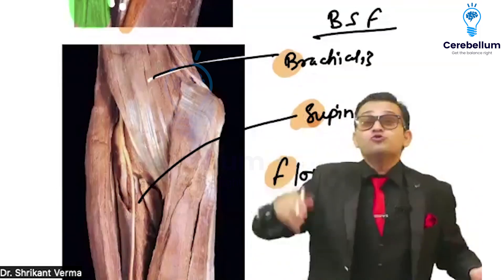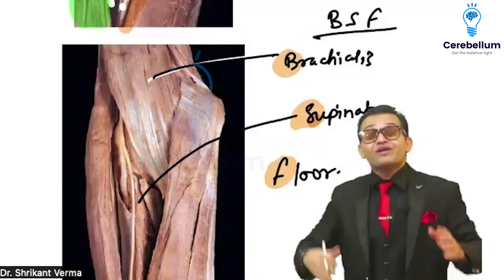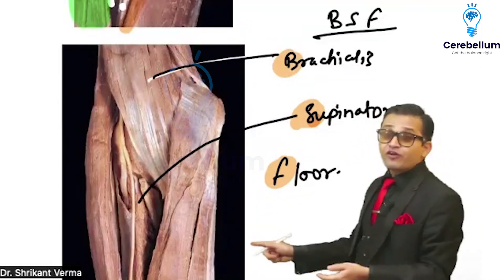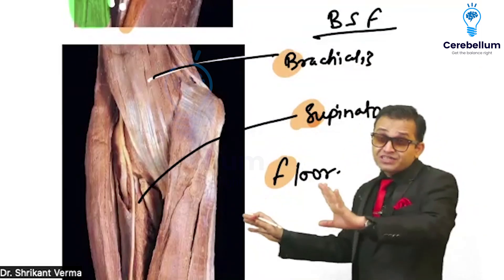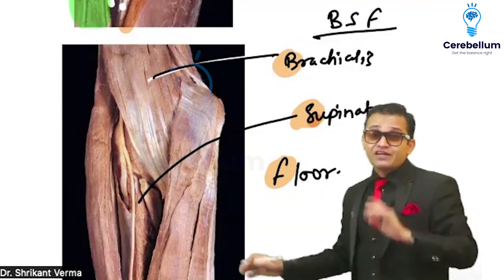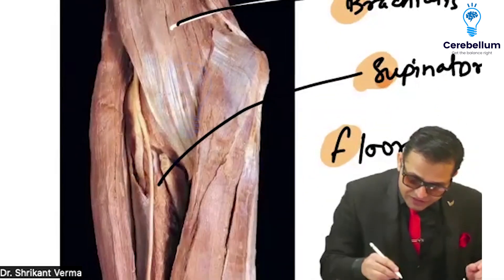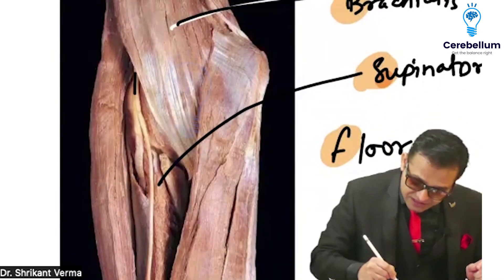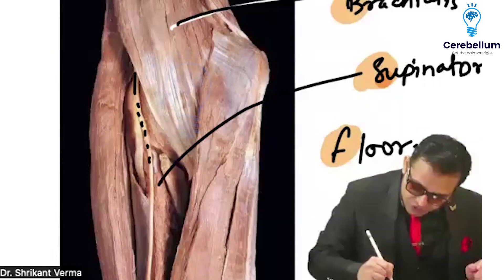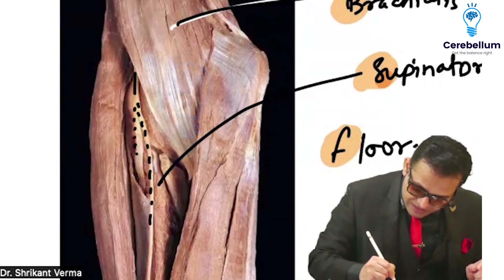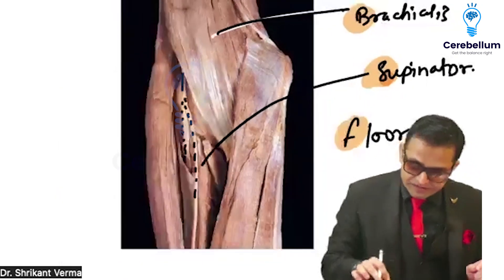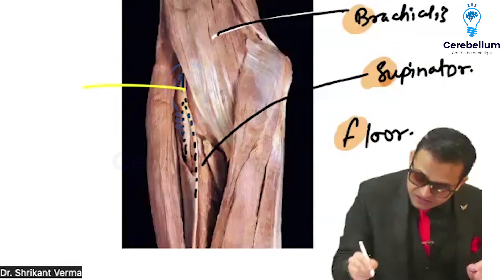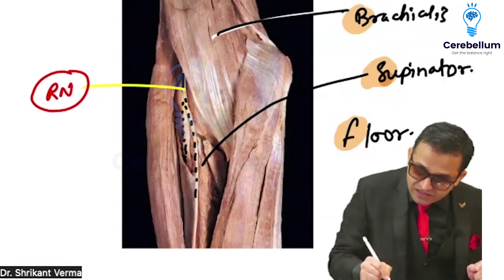Great — salute to all our army and Border Security Force. Don't forget: from the cubital fossa, one question directly or indirectly will always be asked. You can see the radial nerve dividing into a superficial branch and a deep branch.